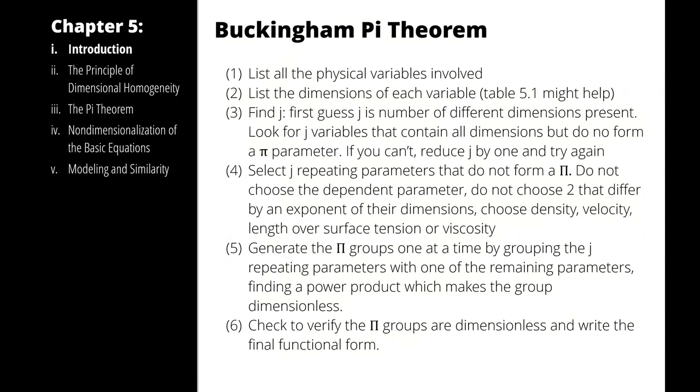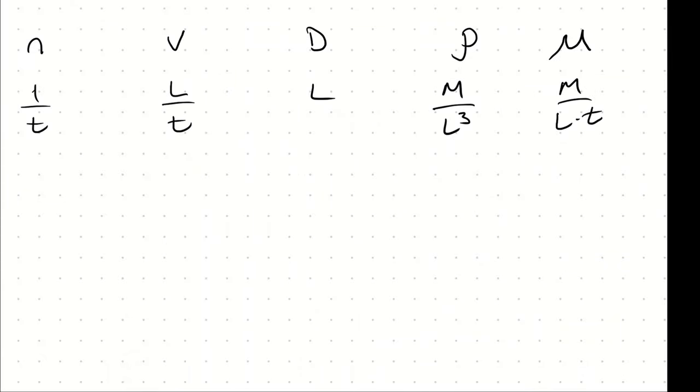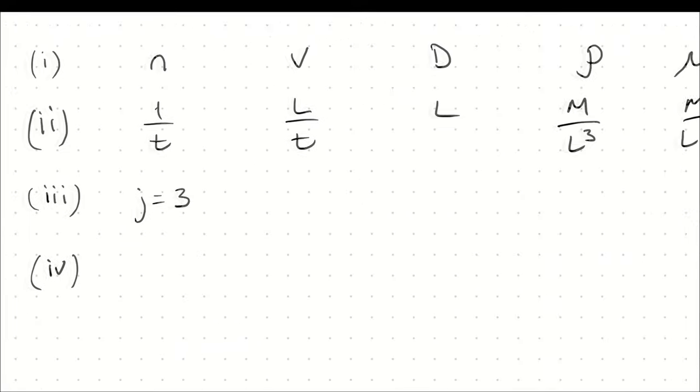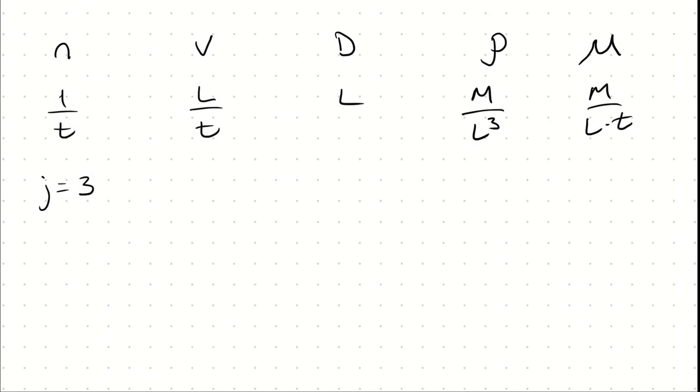Step 3 is to determine a J value, the number of repeated variables that would generate dimensionless pie groups. My general rule is to start with a J value of the number of physical dimensions present. I have 3, so I will start with J = 3. If I can't make it work, I'll reduce J by 1 and start over. Next, I identify which of these five variables should be the three repeating variables. Generally speaking, I want to avoid viscosity and leave my dependent variable if I can. So I will make velocity, diameter, and density my repeating variables.